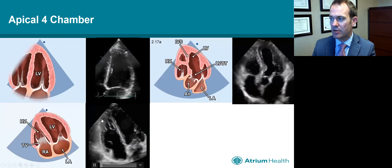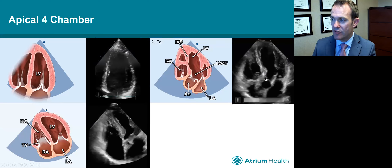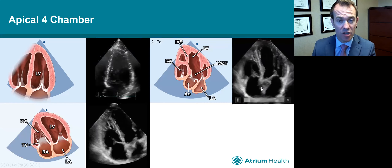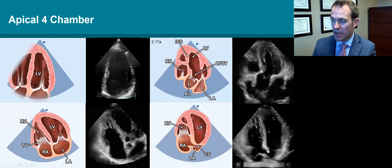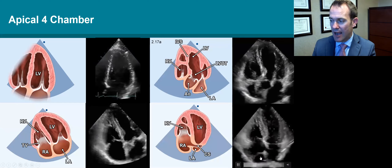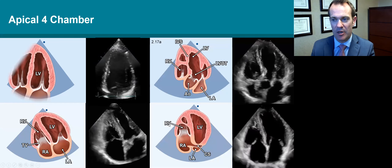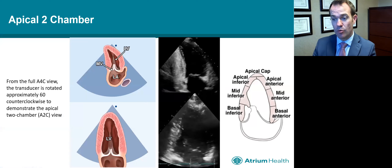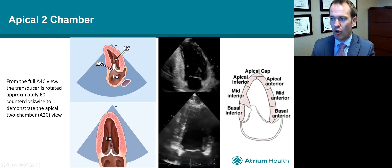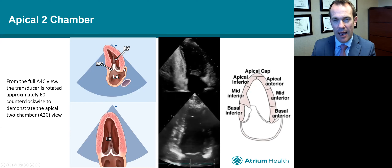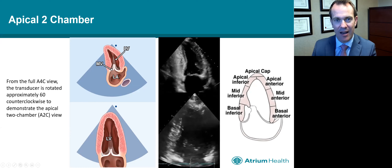By tilting the probe anteriorly, we can go from a three-chamber to a five-chamber view where we bring in the aortic valve — this is where we do our Doppler interrogation of the aortic valve. By tilting the probe in the opposite direction, we can bring in the coronary sinus and see the eustachian valve as the inferior vena cava comes in. For a two-chamber view, as we're in the four-chamber view, we rotate the probe 60 degrees counterclockwise.